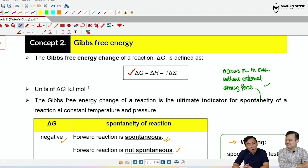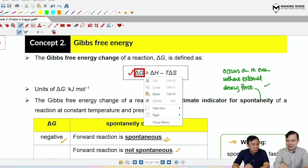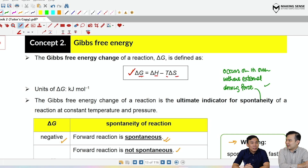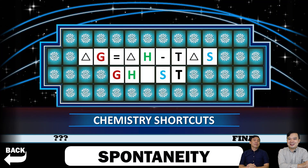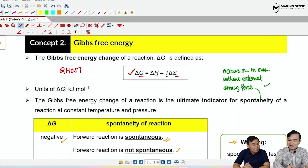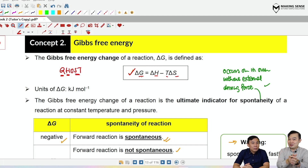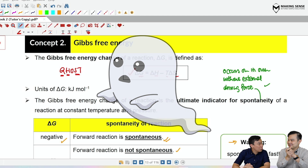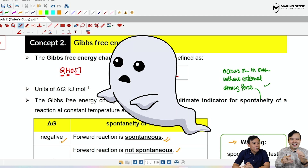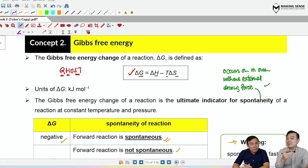This looks a bit complicated and my math is not very good — can you give me a shortcut? Sure. We have G, H, T, and S. The word to connect them is 'Go' — G equals H minus TS — so the letters spell out 'GHoTS', helping you remember the formula. The O has no meaning, it's just a shortcut to remember the formula.